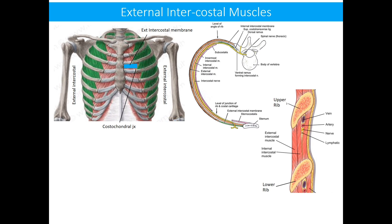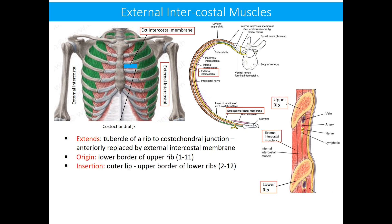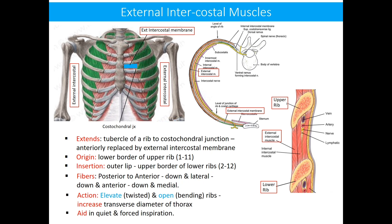The external intercostal muscles: each muscle extends from the tubercle of a rib behind to the costochondral junction in front. Anterior to the costochondral junction, each muscle is replaced by the external intercostal membrane. Each muscle in each space originates from the lower border of the upper rib and is inserted onto the upper border of the lower rib. The fibers of the external intercostal muscle travel downward and laterally in the posterior part, downward and anteriorly in the lateral part, and downward and medially in the anterior part, because of the twisted and bending nature of the ribs.